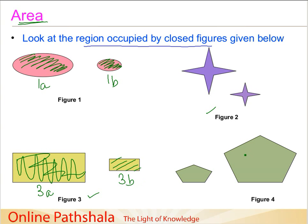This is where the concept of area comes into the picture. When we want to measure the region occupied by closed figures, we find a way to measure it and we call it area. That is precisely what area is — it is nothing but the region occupied by closed figures.